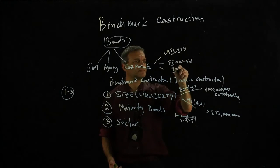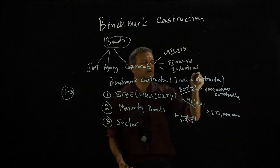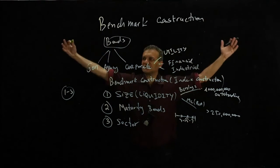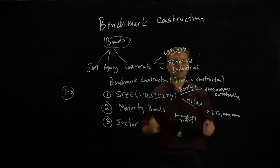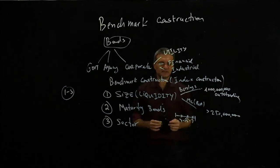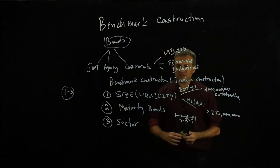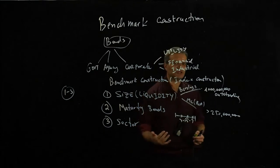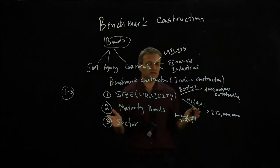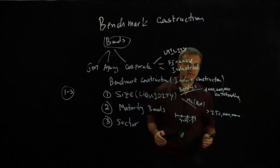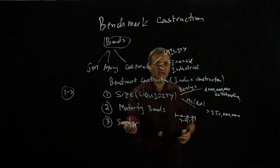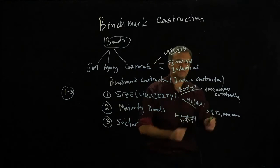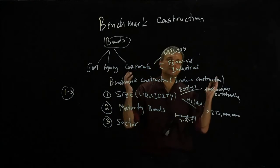So then an index or sub-index, which will be basically constructed from the family, can contain, for example, all the industrial bonds. So there is a bond which is issued, let's say that it verifies the size of liquidity, let's say that it's actually inside the maturity bands, let's say the index includes more than one year, and then if it's industrial, it will go to the industrial bucket. If it's financial, it will go to the financial bucket. And if it's utility, it will go to the utility bucket.